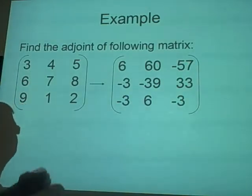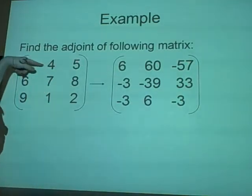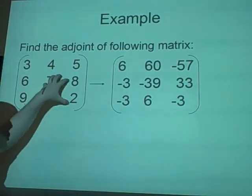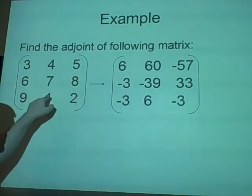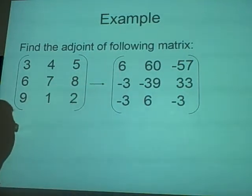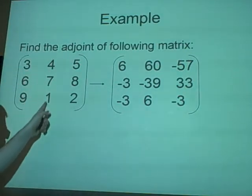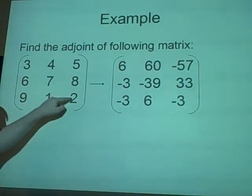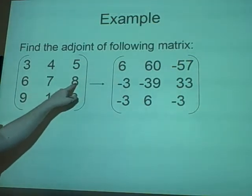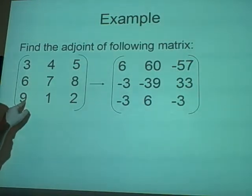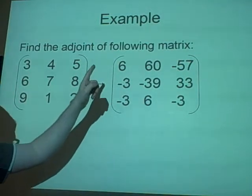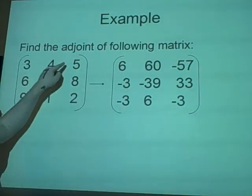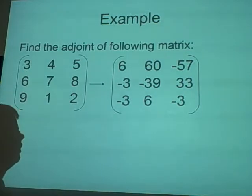We want to cross off the two lines here, so we've crossed off 3. We find the determinant of what's left, which is 14 minus 8, which is 6. The next one, we cross off here and find the determinant of what's left for this point, which is 6 times 2 = 12, minus 72 = minus 60. Because it's a negative position, we make it 60. Remember, plus, minus, plus, minus, plus, minus — and this is the same for a 4 by 4.